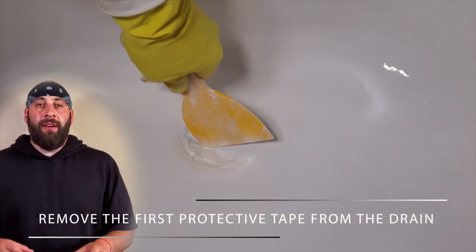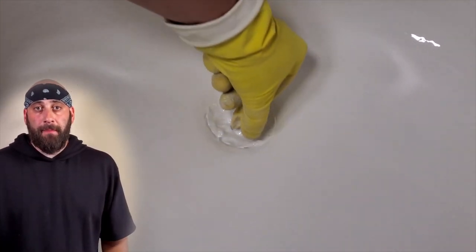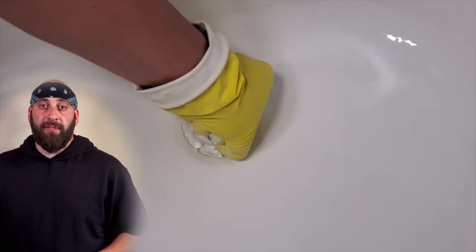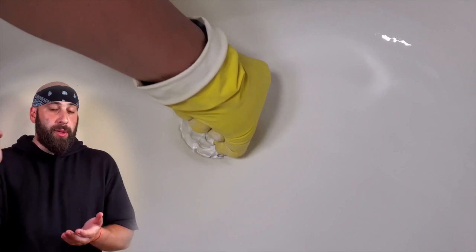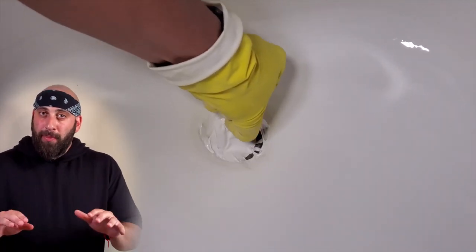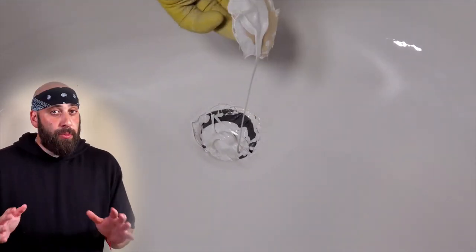After about two to two and a half hours of mixing part A and part B, the paint should stop flowing onto the protective area of the drain. Once it's stopped, then you can carefully remove the first layer of your protective tape. Use your spatula to puncture a hole in the masking tape, but be very careful not to puncture the duct tape. Then, just carefully remove the masking tape without touching any of the surface area of the bath.